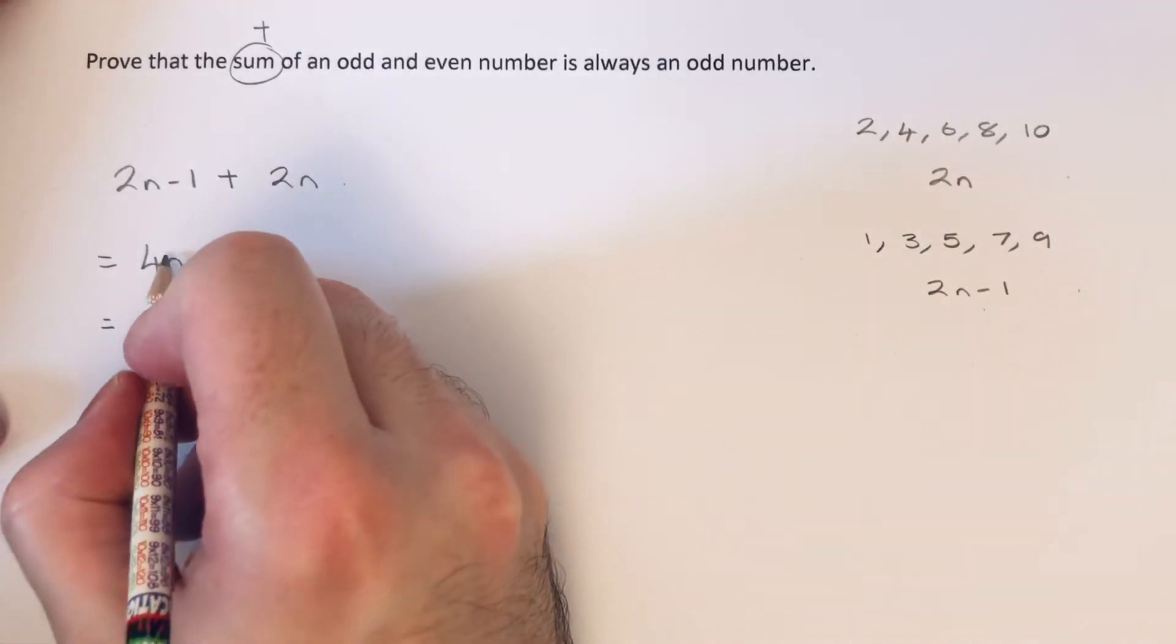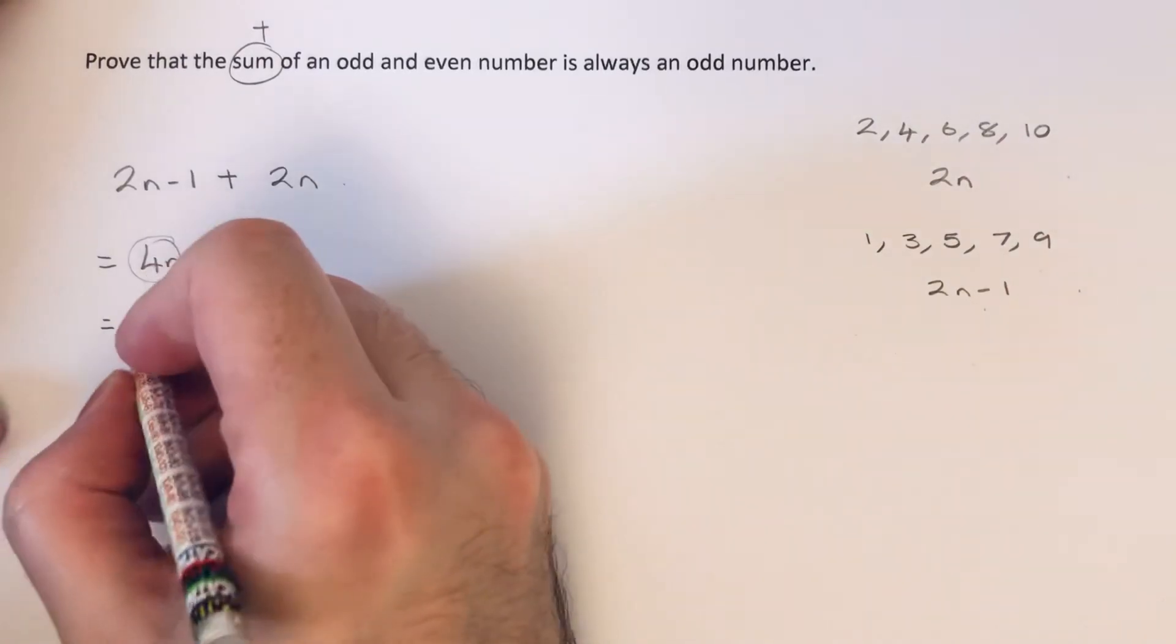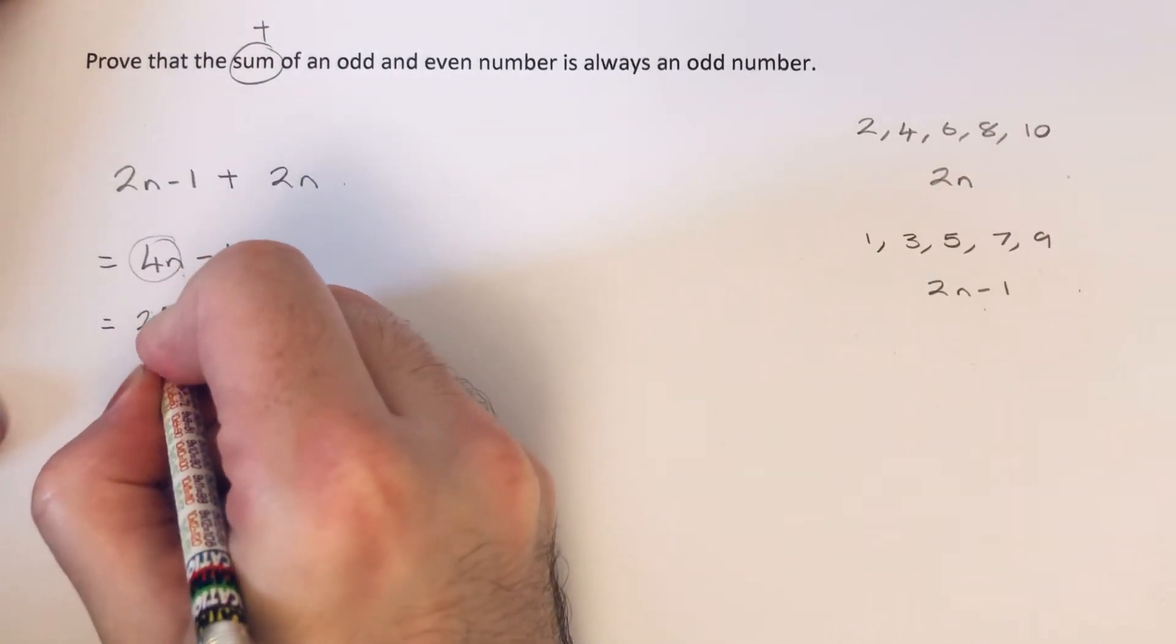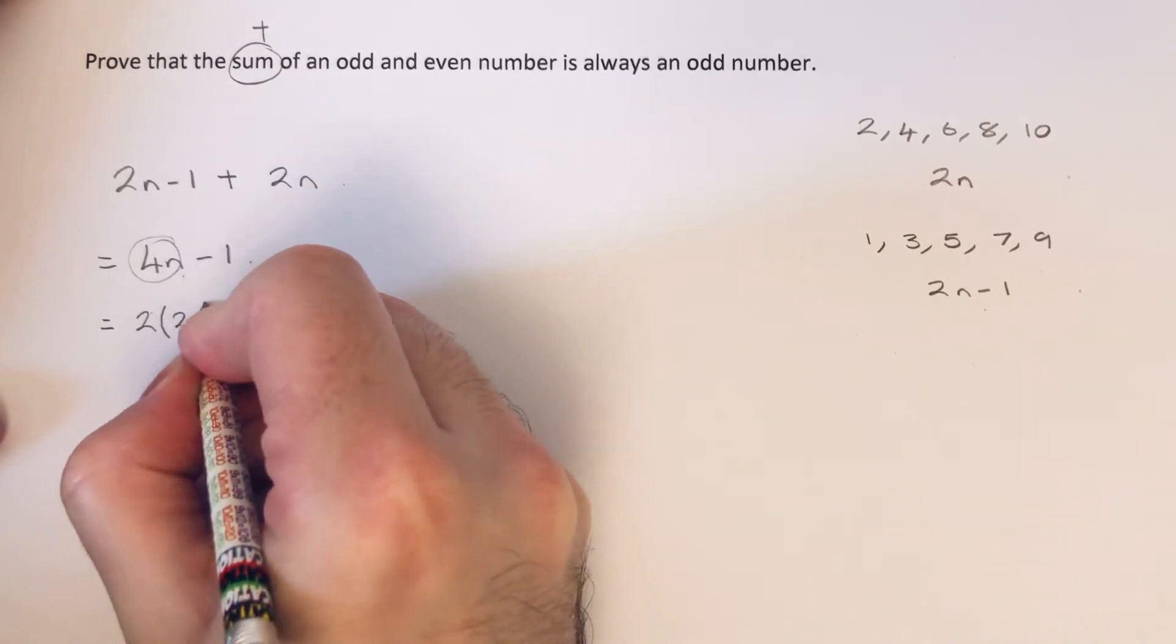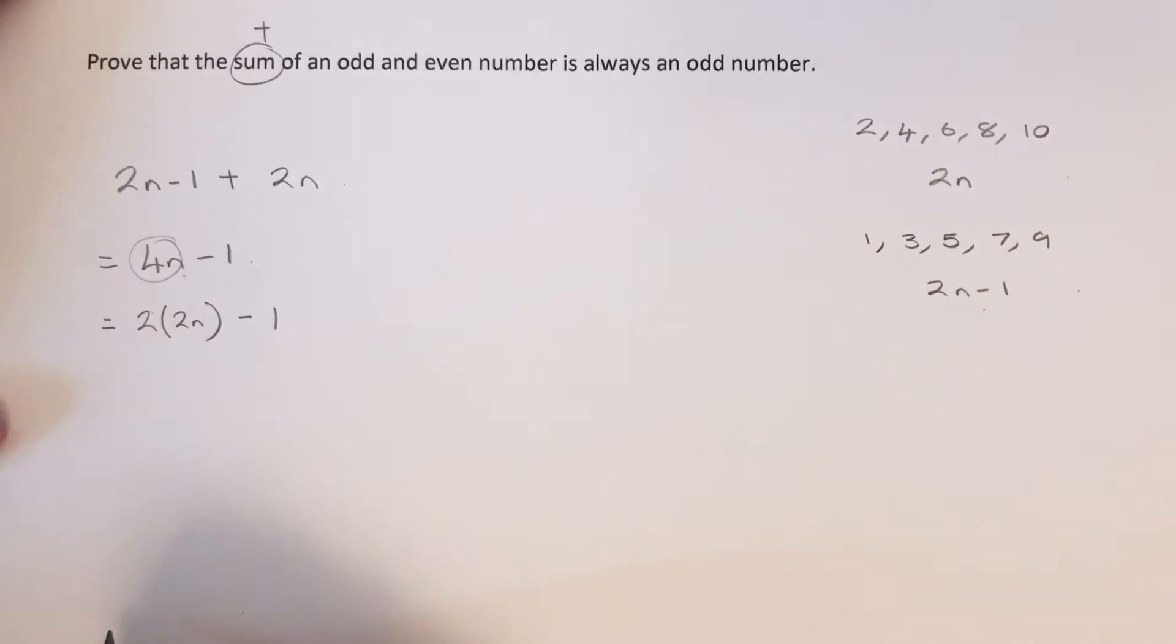We can do this because 4n basically means it's a multiple of 4, and all multiples of 4 are even numbers because 2 times 2n is even. And then if we take 1 off, that's always going to give us an odd number.